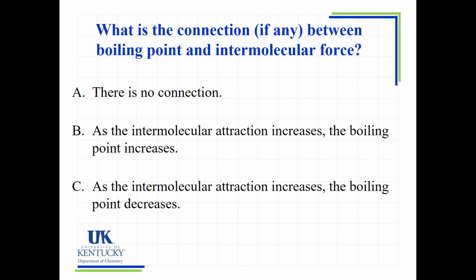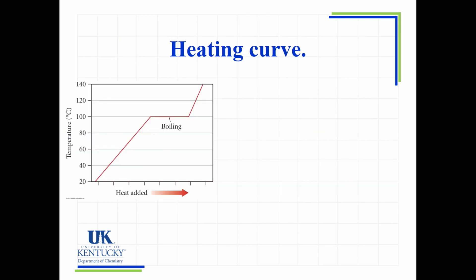The connection between boiling point and intermolecular force: as intermolecular forces increase, boiling points increase. We've seen this connection before when we first introduced intermolecular forces, but now we understand why — it has everything to do with vapor pressure and vaporization. Stronger IMF lowers vapor pressure, meaning a higher temperature is required to reach the external pressure, so the boiling point is higher.